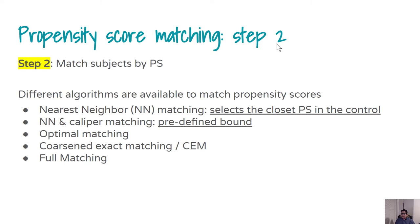Step two: once the propensity scores are estimated, there are matching algorithms. One of the most popular is nearest neighbor matching. Propensity score is a continuous variable, so exact matching will not work — it would drastically reduce your sample size. Instead, we use nearest neighbor matching, but we don't want to match someone just because they are nearest; we want to match within a certain bound or caliper. Otherwise, if there is a gap in propensity scores, you could match someone on the other end of that gap.